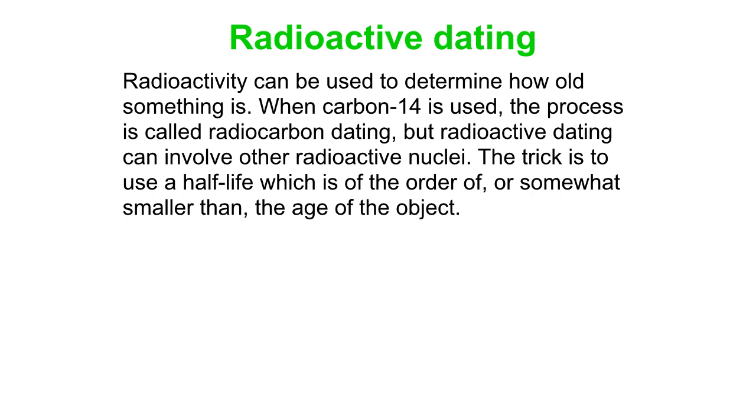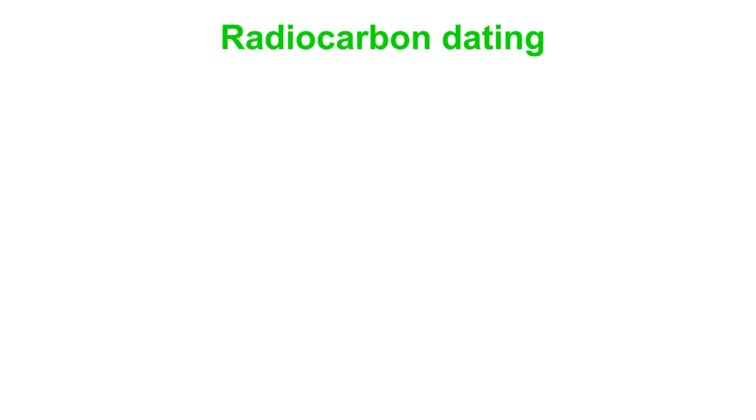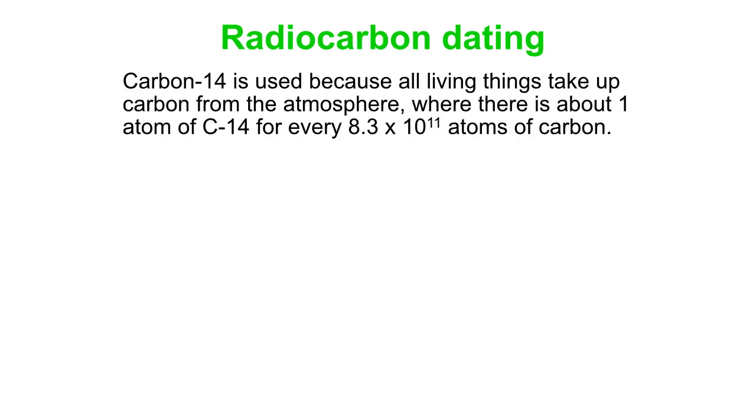So you can actually use radioactivity to measure the age of something. So this is commonly done with carbon-14, but you can use other materials as well. And when it's used with carbon-14, you call it radiocarbon dating. So the trick when you're doing this is to use something that has a half-life on the order of the age you're trying to measure.